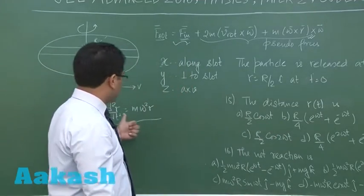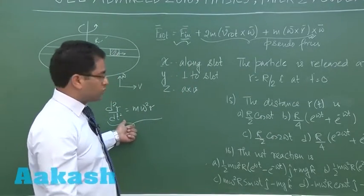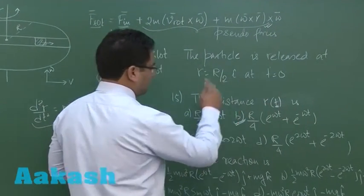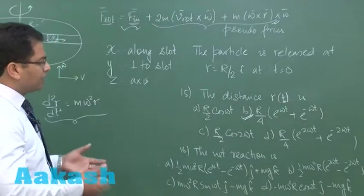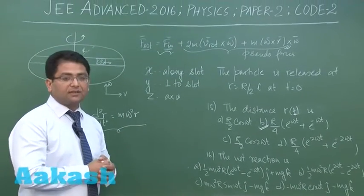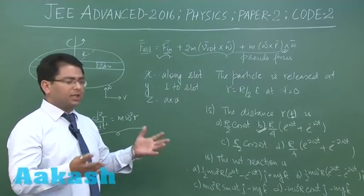So here at any time t, the distance from the center would be given by this. And this is only the way how we generally solve the second order differential equation. So it's not that we are going in an unfair way.